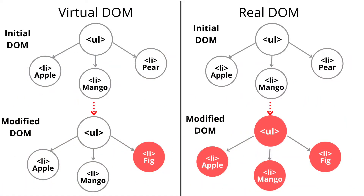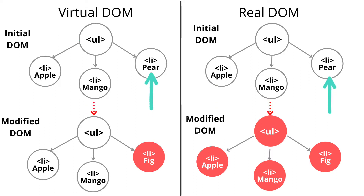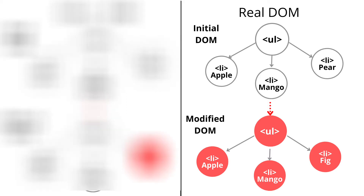I am sharing a simple image with you. There is a Virtual DOM and a Real DOM shown on this image. Let's take a simple example — a list. This list has three list items: Apple, Mango, and Pear. Whenever I loaded this list into the browser, it loaded three bullet points. Now, using some programming, I modified the third fruit — Pear — to Fig. I changed the name from Pear to Fig.